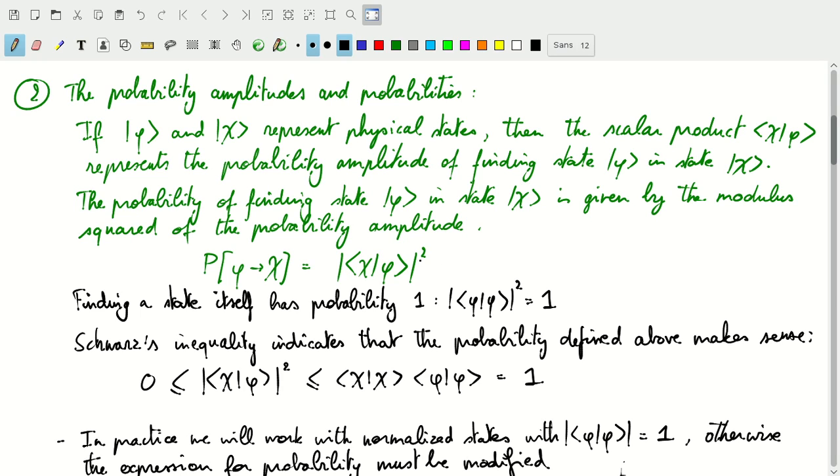The probability is given by the modulus squared of the probability amplitude. The probability amplitude is the scalar product, and the probability is the square of that or the modulus squared of that. The probability of finding a state itself is equal to one. So the probability of finding the state phi in the state phi must be equal to one.